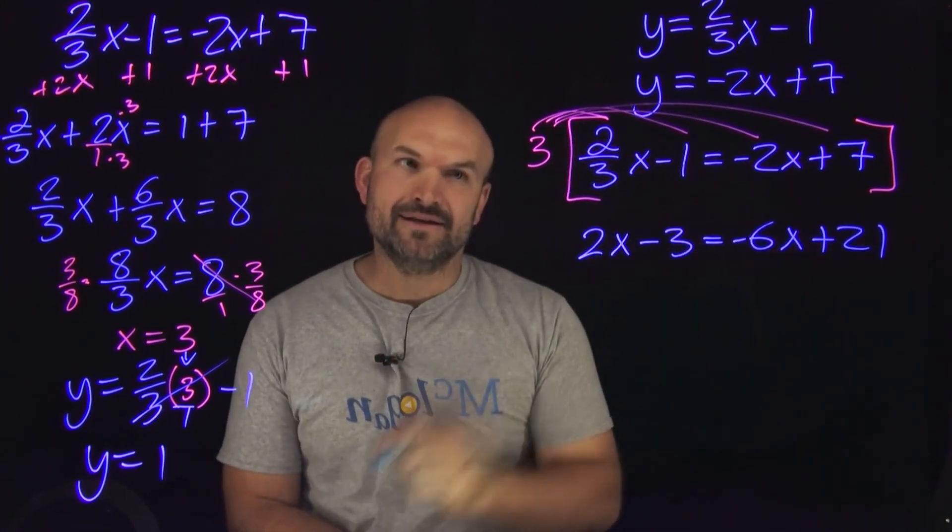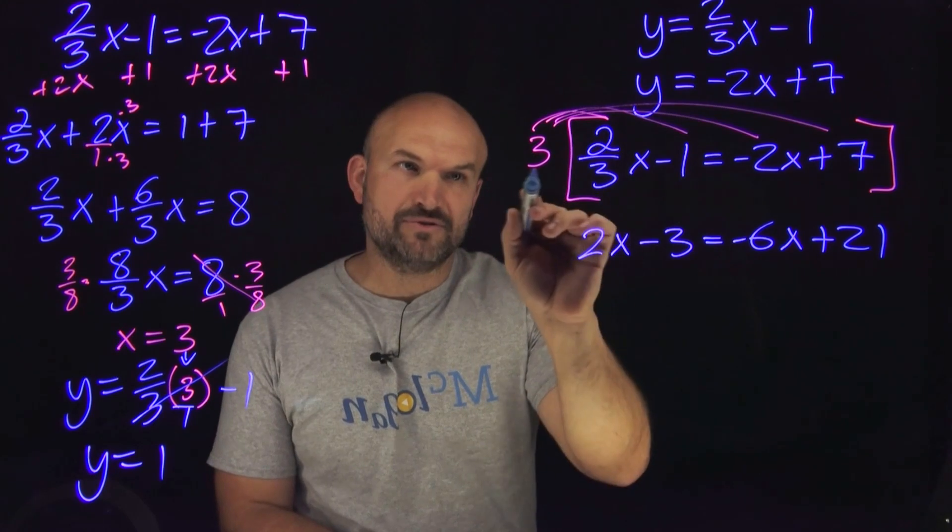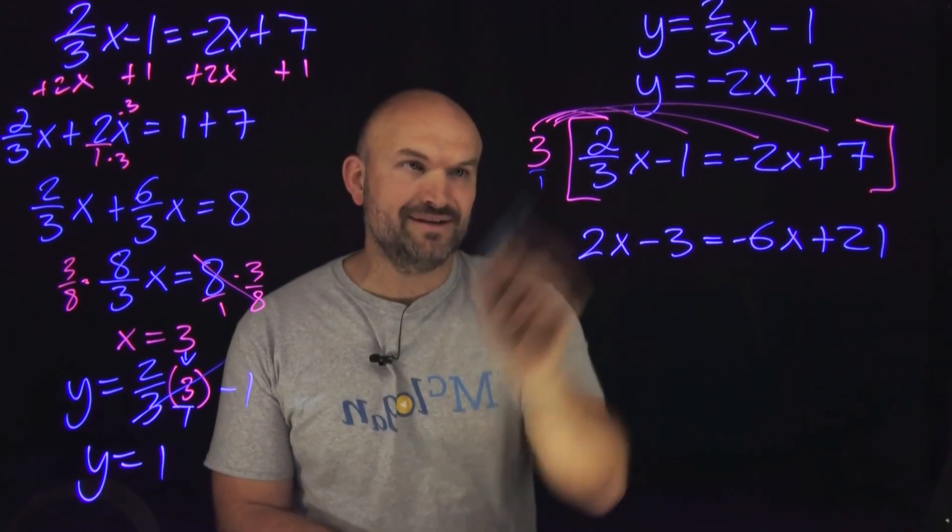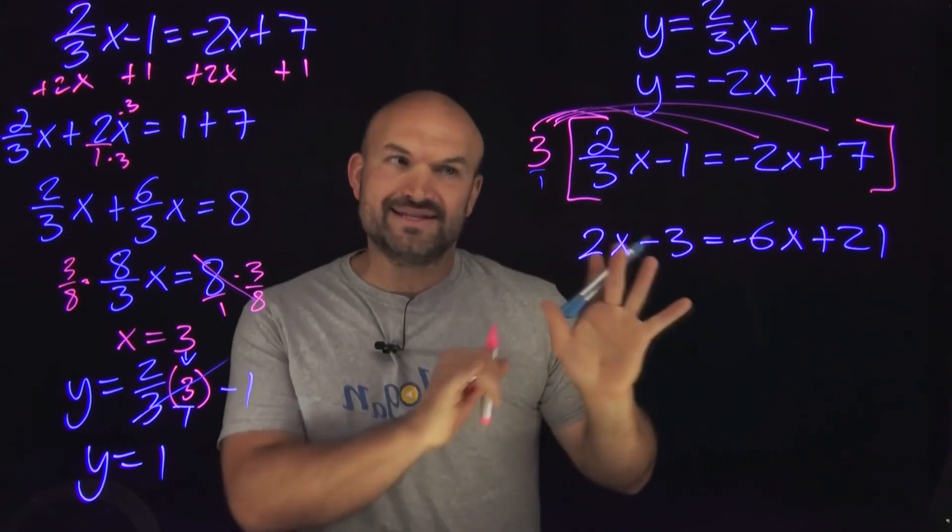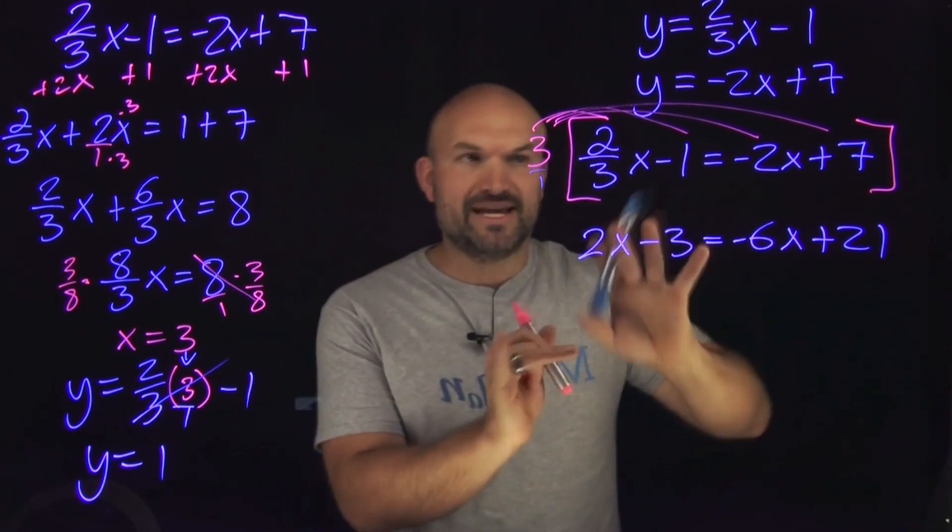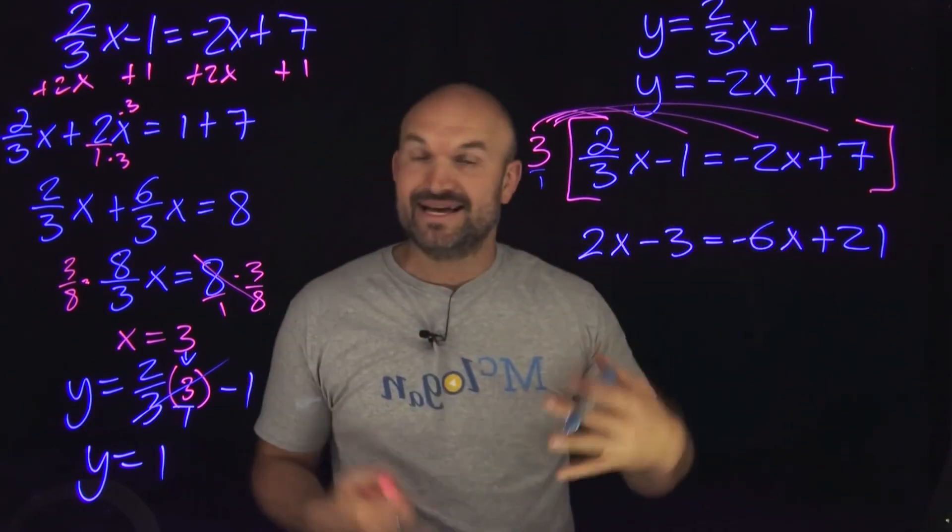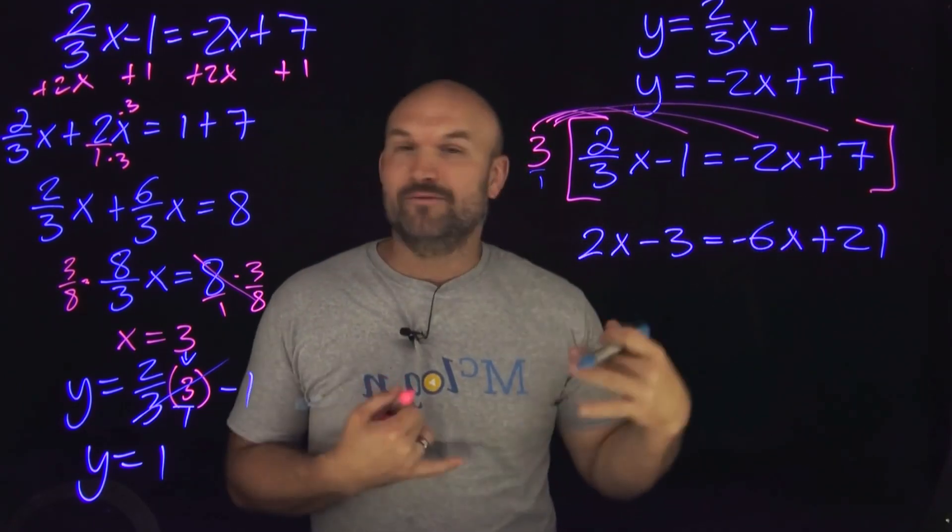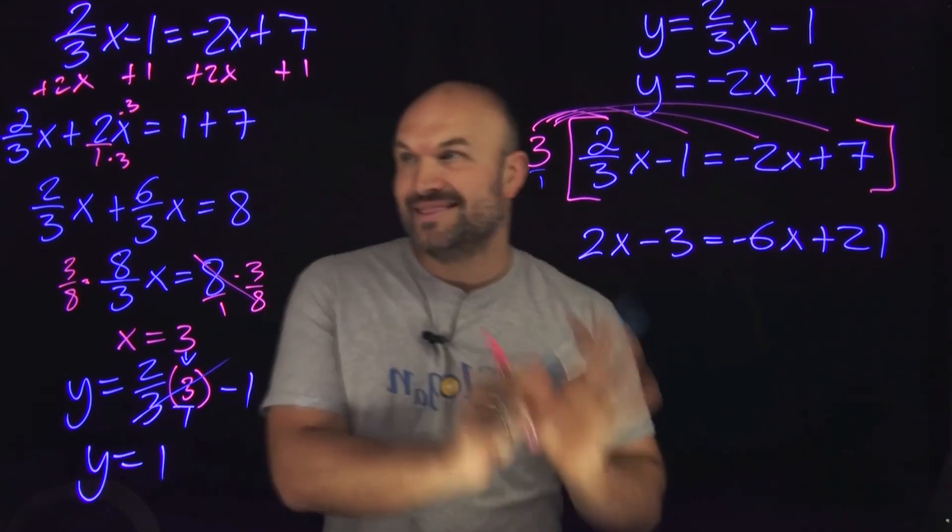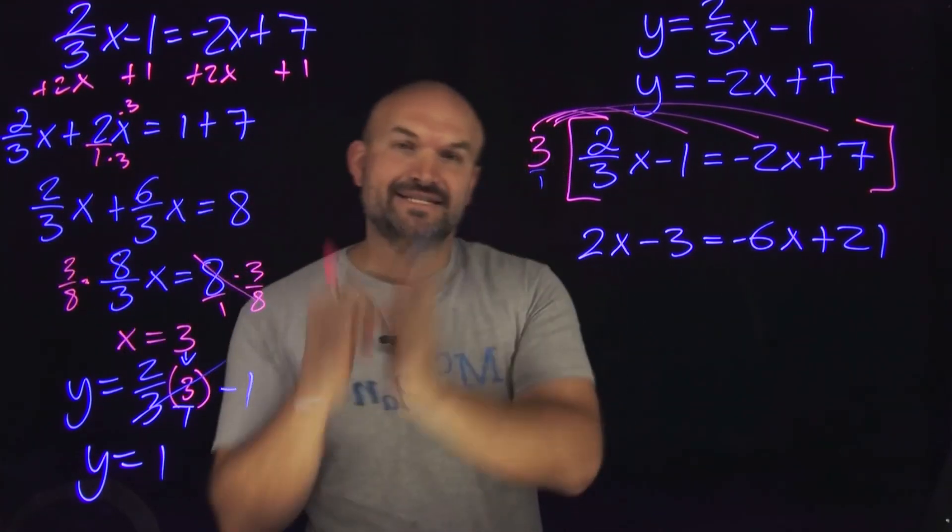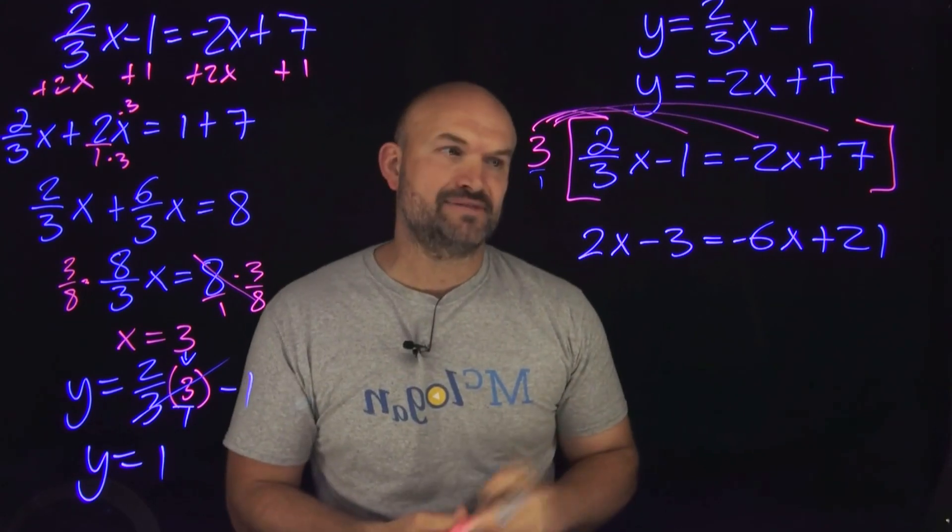Now again, notice here when I multiply 3 times 2 thirds, you can think of that as a 3 over 1, so therefore the 3s divide out. That's why I'm just leaving here with the 2x. And just make sure that the signs are going to carry over. Because a lot of times students will mix that up, including myself, will make that mistake. So just make sure you double check your work, looks like everything's good. Then, just like we did over here, get the x's to the same side and the constants to the same side.